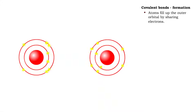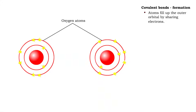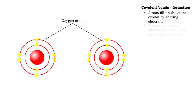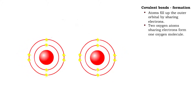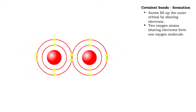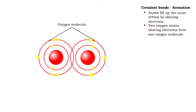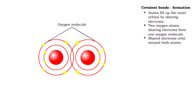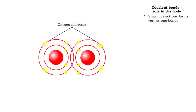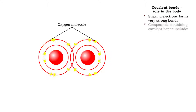Covalent bonds are created when two atoms share electrons in the outermost orbital. The oxygen molecule is formed by the sharing of electrons between two oxygen atoms, and both of the original oxygen atoms share the electrons. Covalent bonds are strong bonds, and almost all the compounds in cells are held together by covalent bonds.